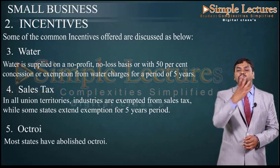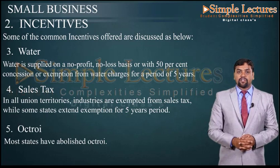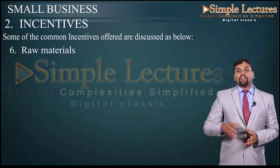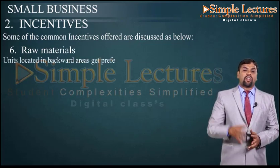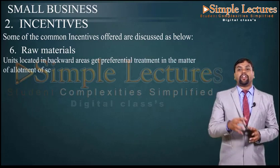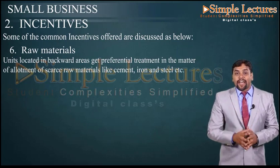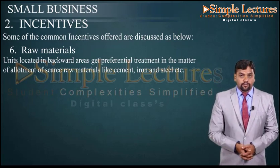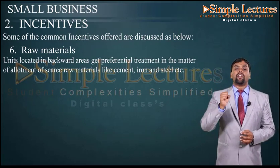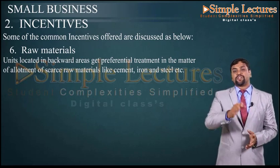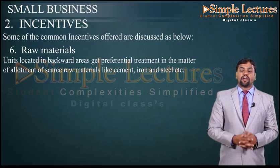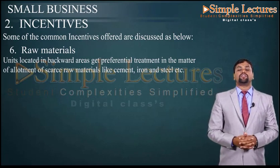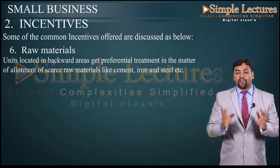The next incentive scheme relates to raw materials. Units located in backward or rural areas get preferential treatment in the allotment of scarce raw materials like cement, iron, and steel. The government gives priority to small business units, especially in rural and remote areas, to acquire all required raw materials on an easy basis.